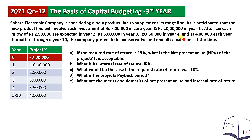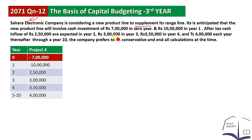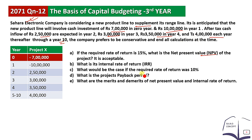Now let's solve the question. Sara Electronics Company is looking to add a new product line. We will solve this question. We have three calculations: Net Present Value, IRR, and Payback Rate. Payback Rate is one of the calculations.